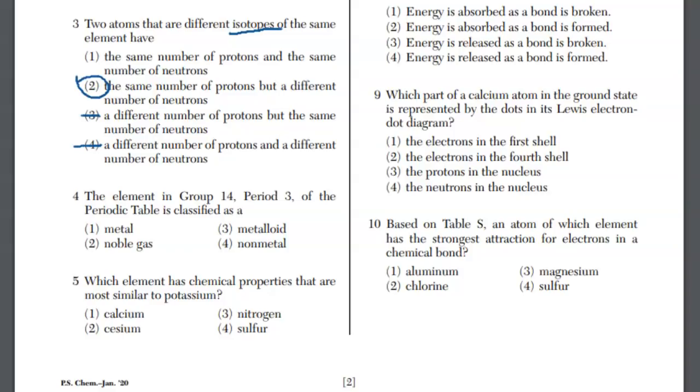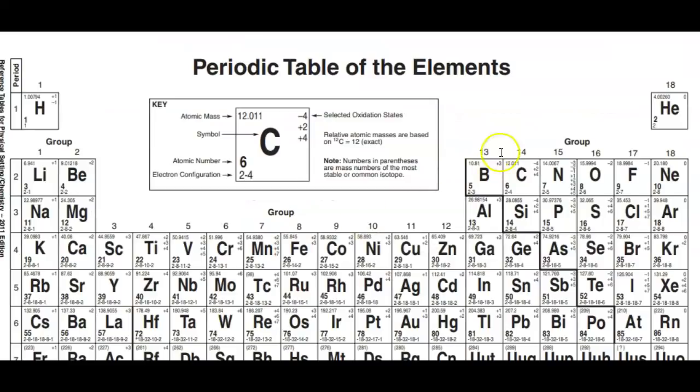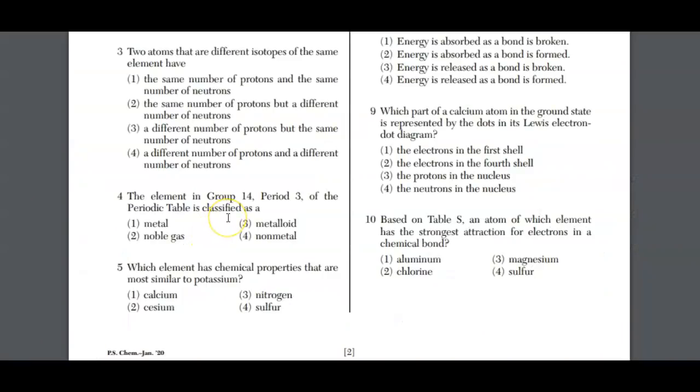For question four, an element in group 14, period 3 of the periodic table is defined as what? You're going to go to the periodic table on the reference tables. Your groups are your columns, your periods are your rows. I'm dealing with silicon, Si. There are six elements known as the metalloids or semi-metals: silicon, boron, arsenic, tellurium, germanium, and antimony. These sit on the staircase. They have properties of both metals and non-metals. The answer is choice three, metalloid.